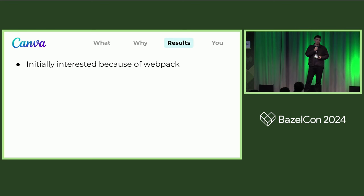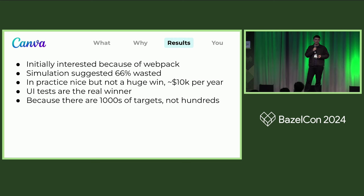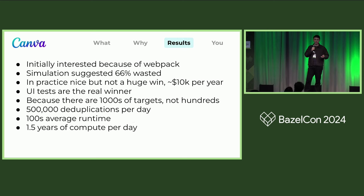What results have we had with action deduplication? We were initially interested because of some particularly large Webpack targets taking between 7 and 10 minutes. Via simulation we found that about 66% — two-thirds — of all builds of these targets were wasted due to so many commits landing in that window. In practice it's been nice but not a huge win, on the order of maybe $10,000 of compute saved a year. The real winner has been the UI tests, which run against the output of those Webpack builds — thousands of targets. With the UI tests, we get about half a million deduplications a day with an average runtime of 100 seconds, which is like a year and a half of compute saved every day — hundreds of thousands of dollars a year in compute we don't have to rent from AWS.